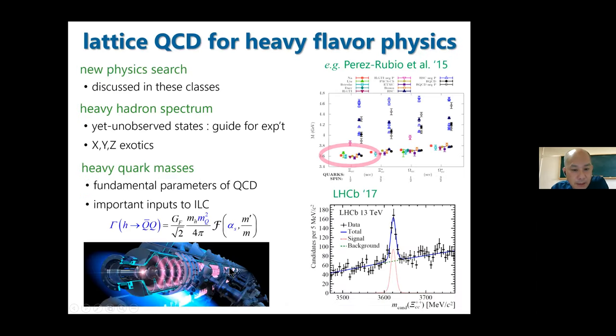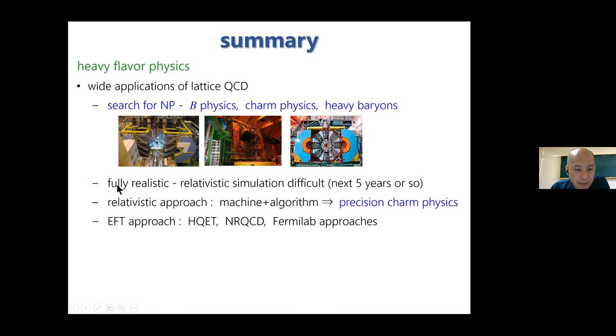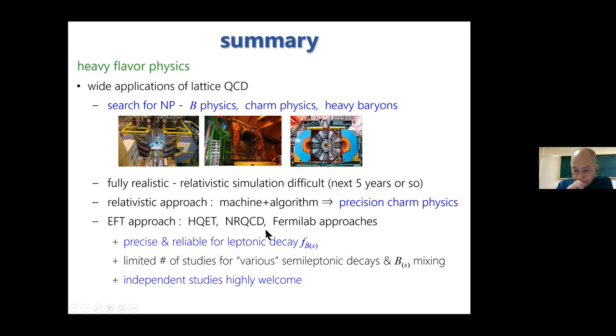Let me summarize this class. For heavy flavor physics, lattice QCD has wide applications and the search for new physics is just one example. But I have to say that fully realistic simulation is still difficult for the next five years or so. We have developed several approaches. The relativistic approach, thanks to improvement in computer power and algorithms, now provides very precise realistic studies for charm physics. EFT approaches provide independent calculations based on HQET and the Fermilab approach.